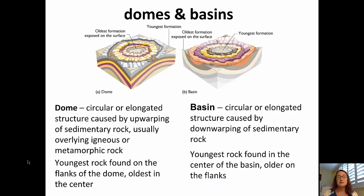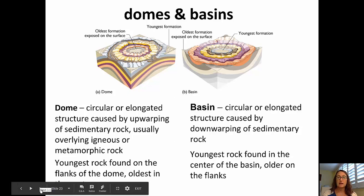We also have domes and basins. A dome is a circular or elongated structure caused by the upwarping of sedimentary rock, often when igneous or metamorphic rock has pushed up from underneath. In a dome, the youngest rock is found on the flanks and the oldest rocks in the center. In a basin, we see the opposite pattern — a downwarping of the surface — with the youngest rocks in the center and older rocks out on the flanks.